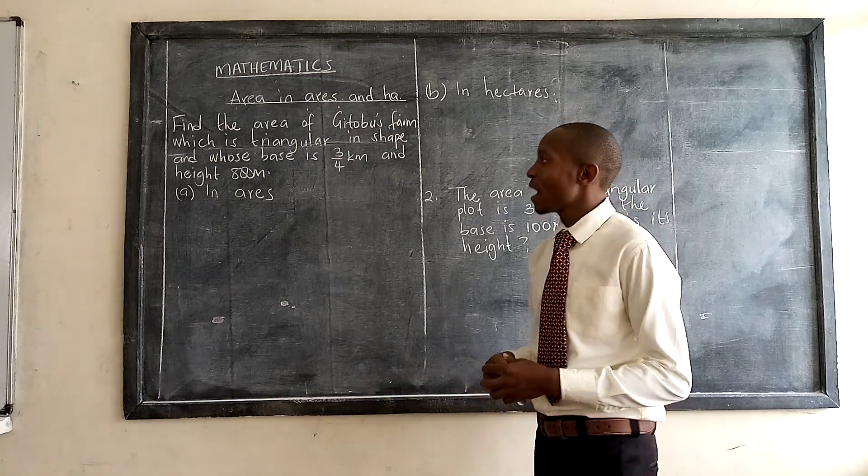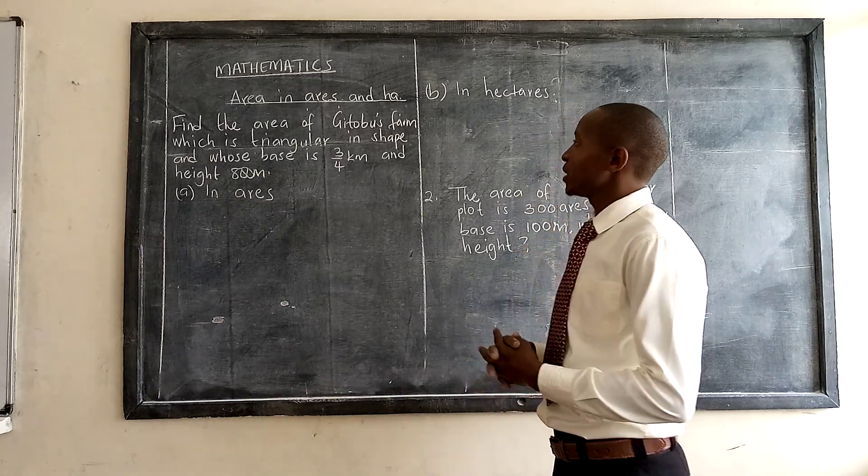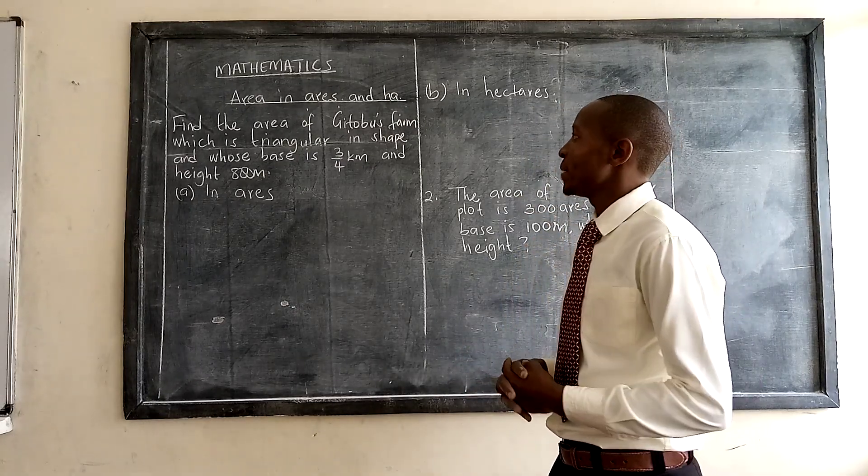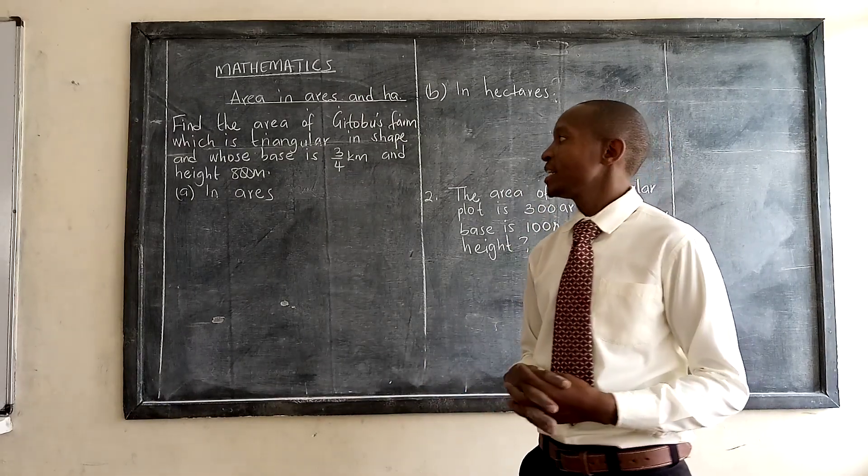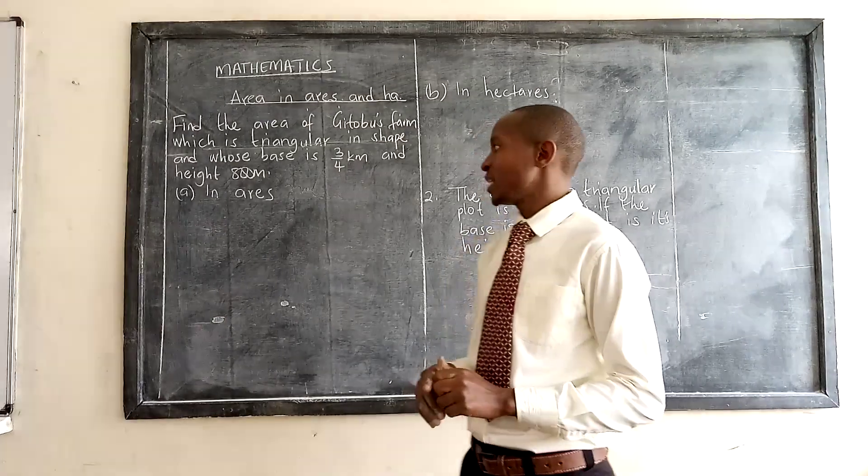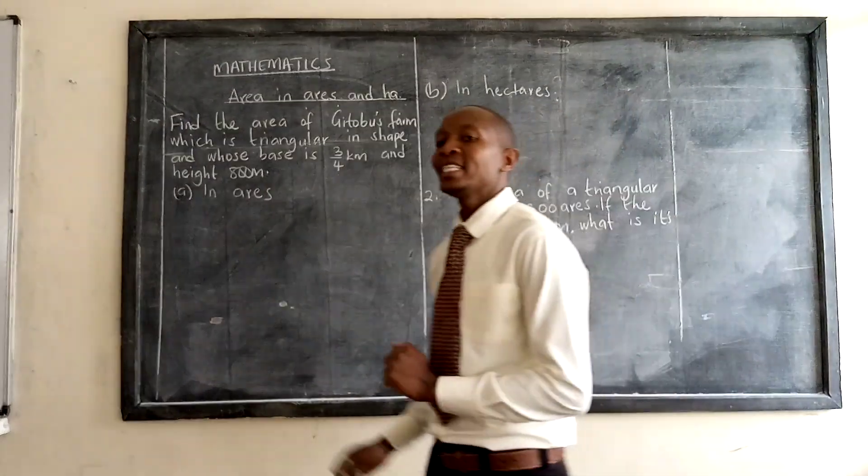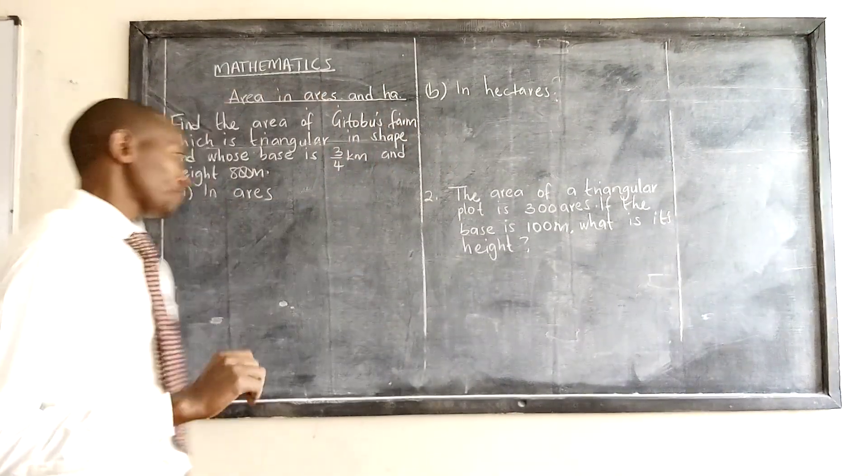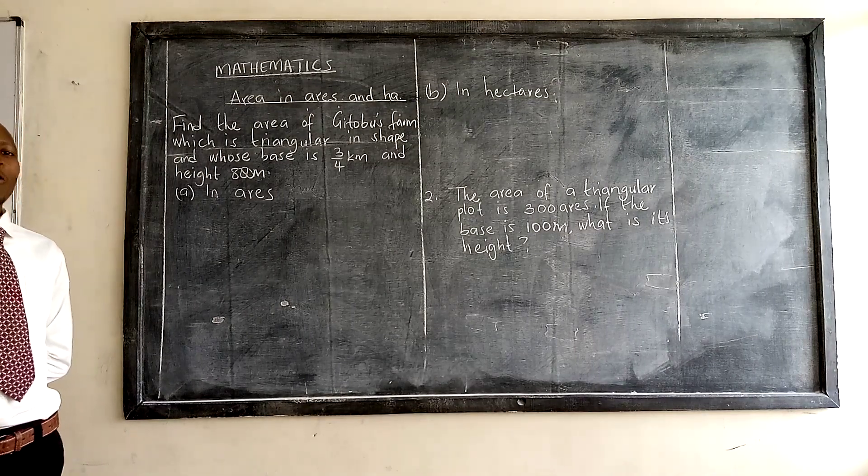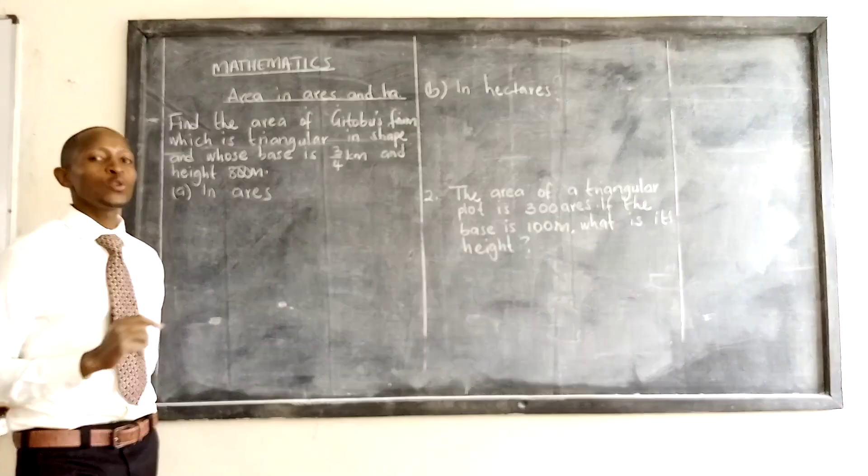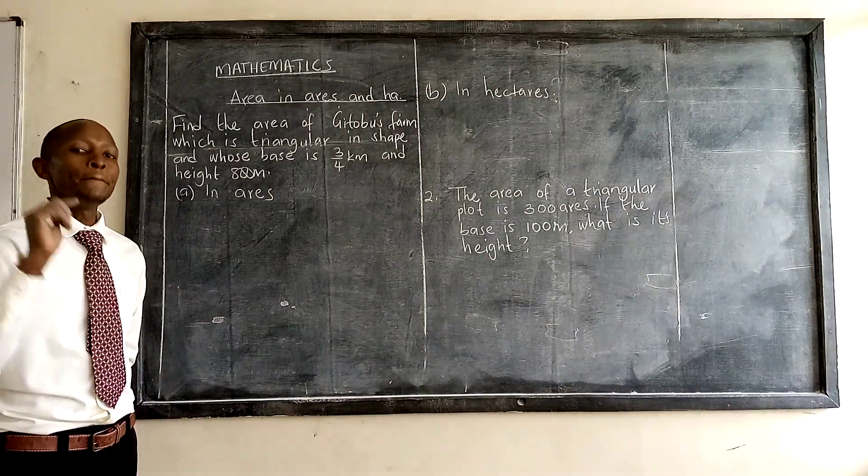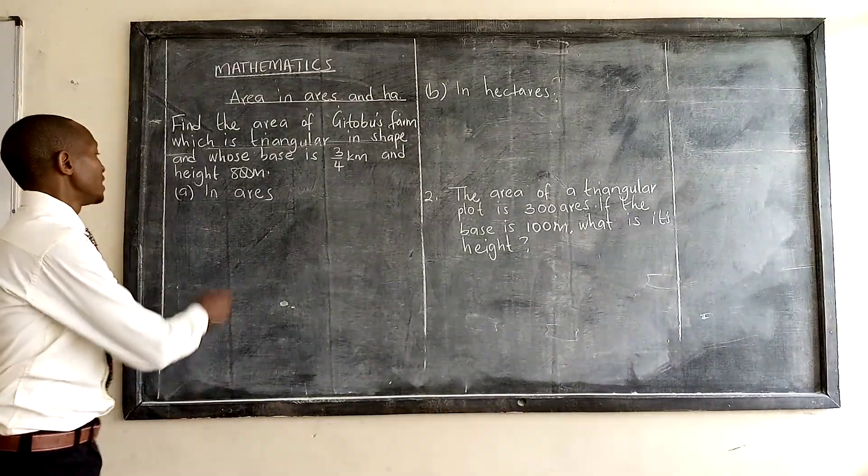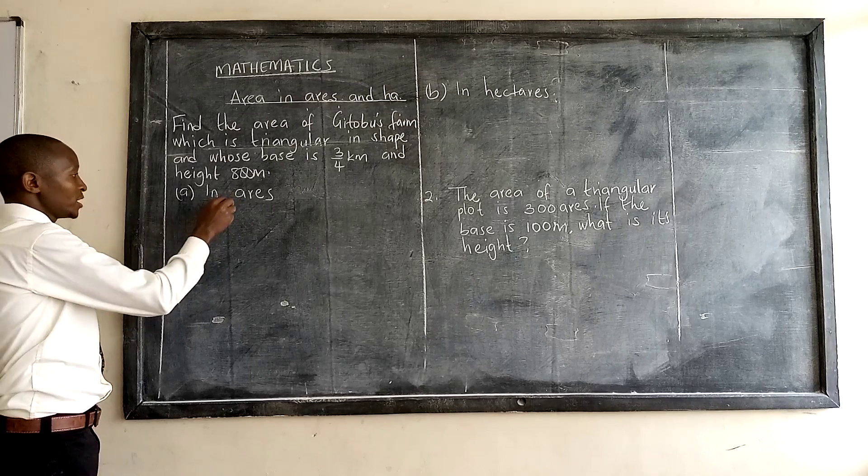...area of Mitogu's farm which is a triangle in shape and whose base is three quarter kilometers and a height of 800 meters. Question A: get the area in airs. Remember, we said one air is equal to 100 meters square, so we need meters squared.